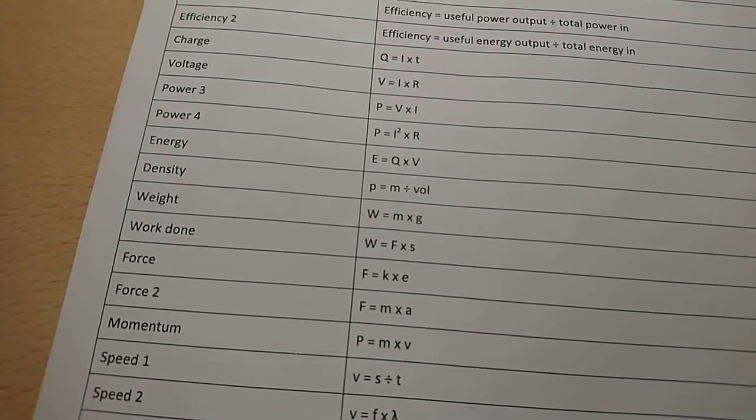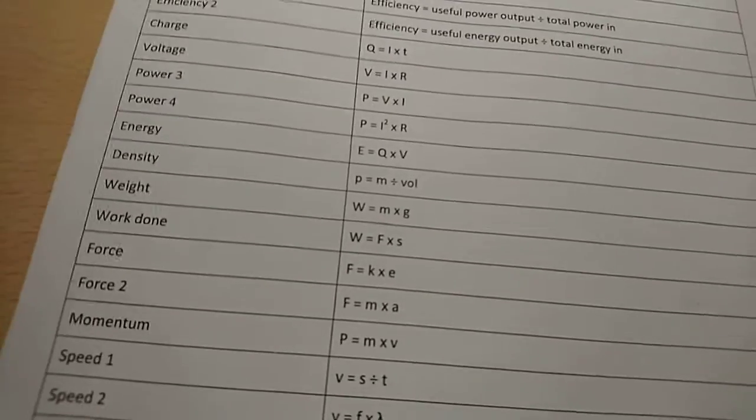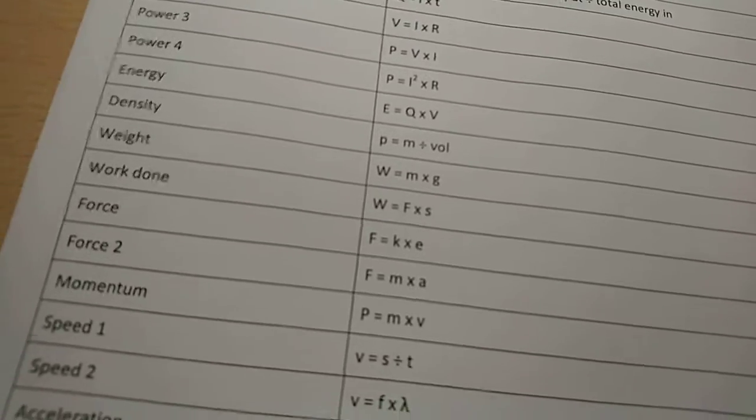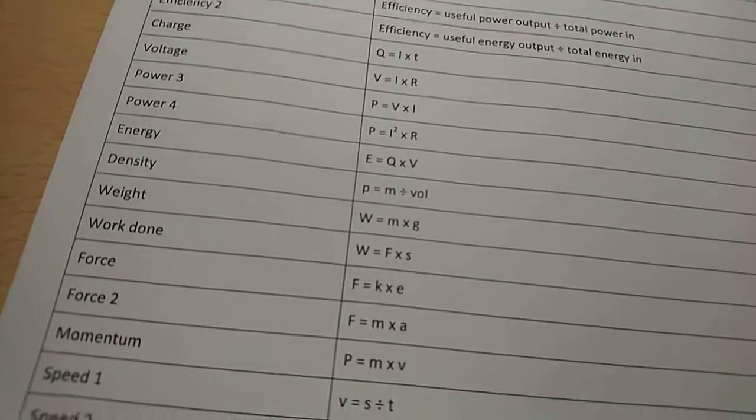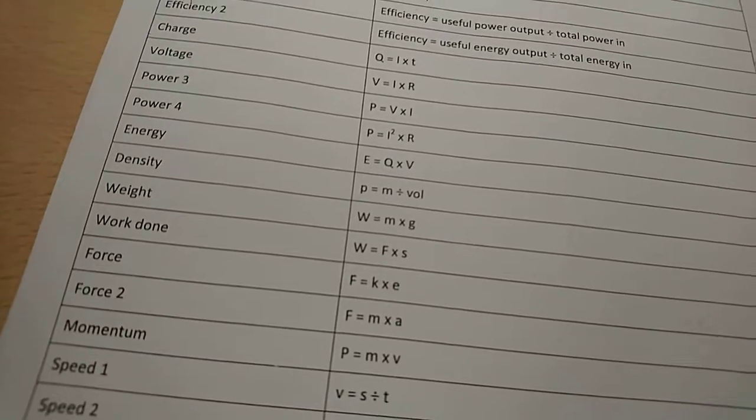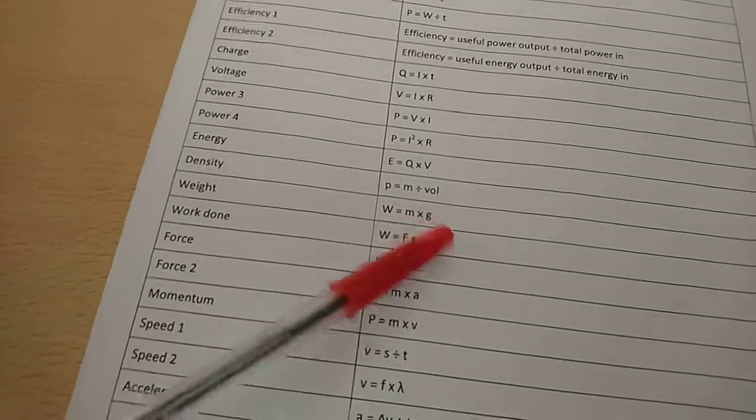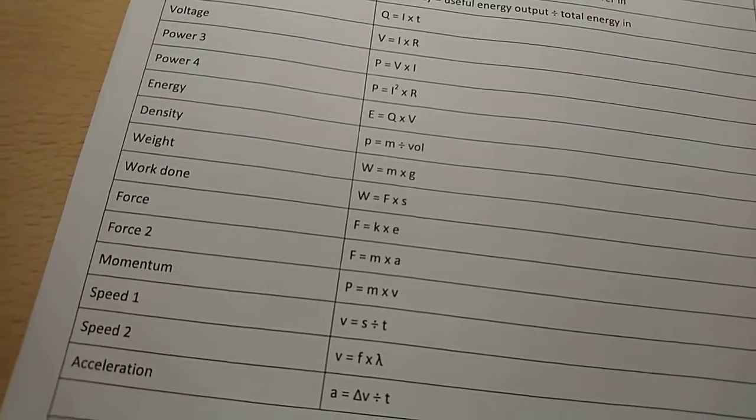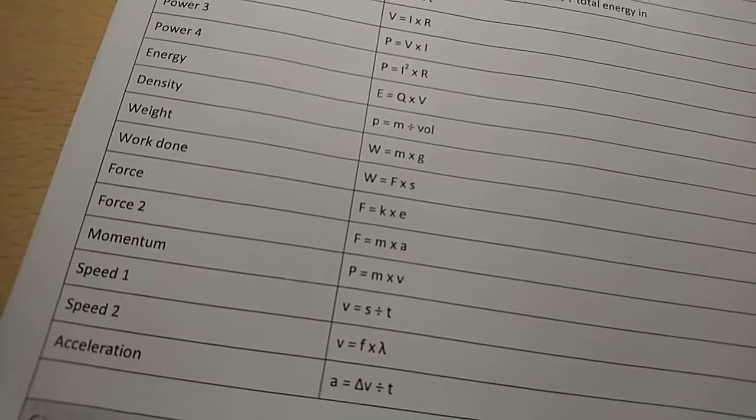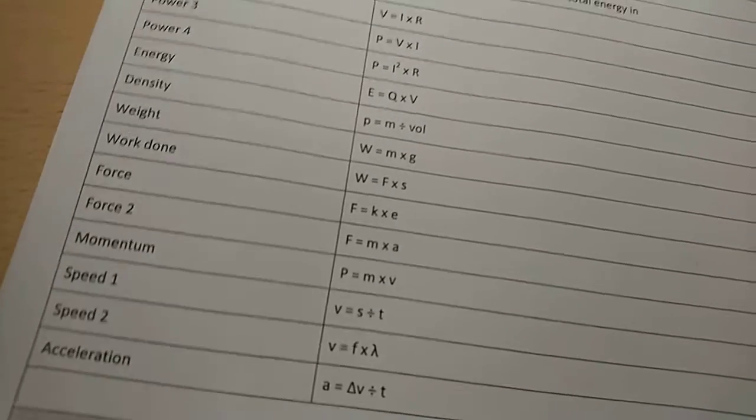Work done equals force times displacement. I believe the S stands for displacement and D stands for distance. Speed equals distance over time, so that must mean displacement, which is similar to distance except it has a direction and can be negative. So now let's move along.